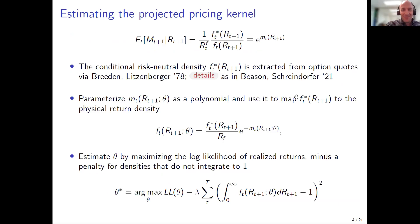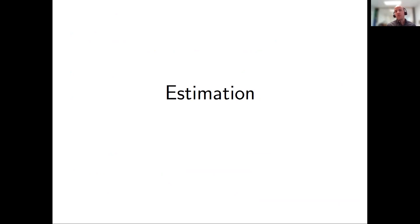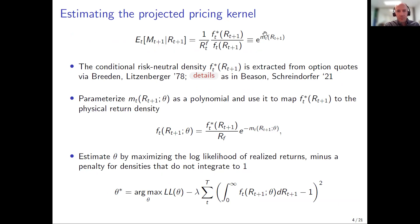I'll walk you through how we estimate things, then show a bunch of robustness tests — different versions of estimating the same thing — to try to convince you it's statistically significant, and then take it to the models. The object we'd like to estimate is the projection onto stock market returns. We either estimate risk-neutral and physical probabilities and take their ratio, or — what we actually do — we parameterize the pricing kernel itself. To do this we still need an estimate of the option-implied density, building on Breeden-Litzenberger.